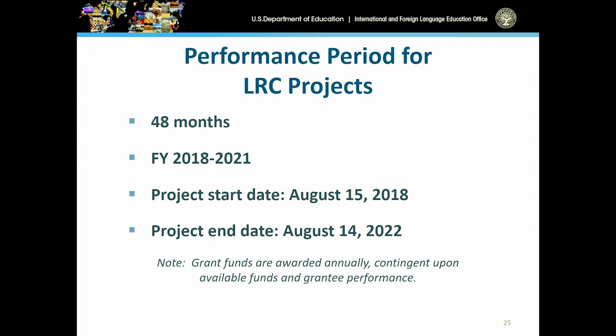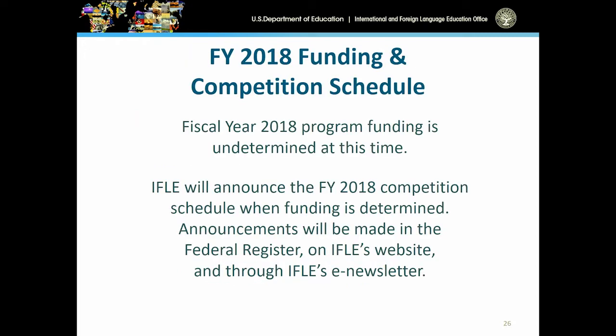We anticipate, similar to periods in the past, that the performance period for our next round of grant projects will be 48 months, running from fiscal year 2018 to 2021. The project start date is tentatively anticipated for somewhere in the middle of August 2018, lasting through the middle of August 2022. Without an approved appropriation from Congress, we don't have a determination of the amount of funding available at this time, but once we receive that appropriation, we will announce the fiscal year 2018 competition schedule.